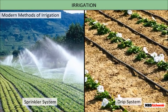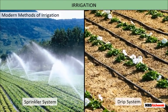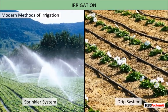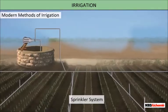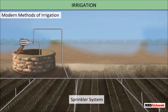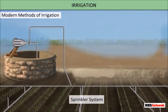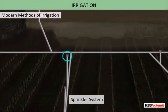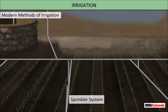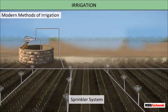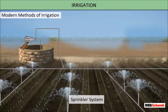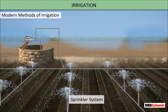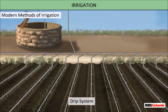Modern methods of irrigation help us use water economically. Two main methods used these days are the sprinkler system and the drip system. The sprinkler system is more useful on uneven land where there is lack of sufficient water. Perpendicular pipes with rotating nozzles on top are joined to the main pipeline at regular intervals. When water flows through the main pipe with the help of a pump, it escapes through the rotating nozzles and gets sprinkled on the crop as if it is raining. The sprinkler system is very useful for sandy soil.